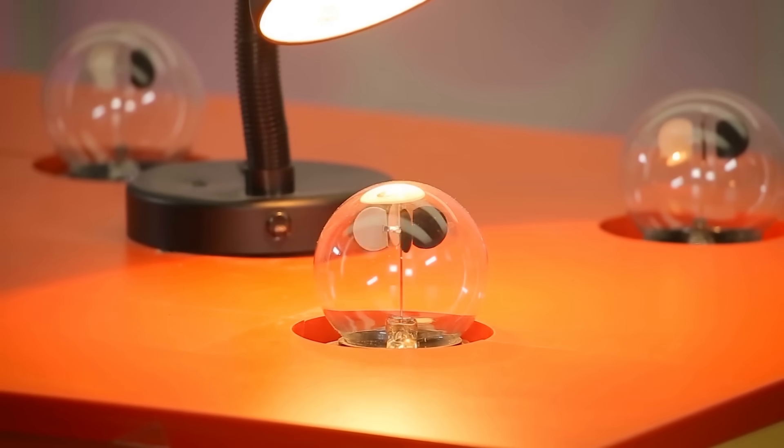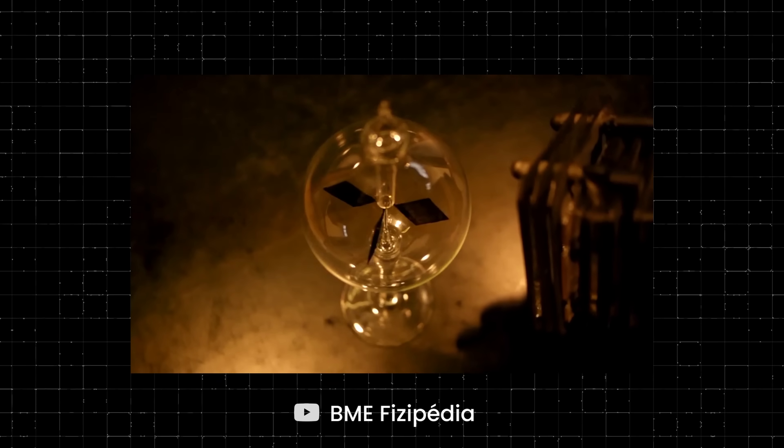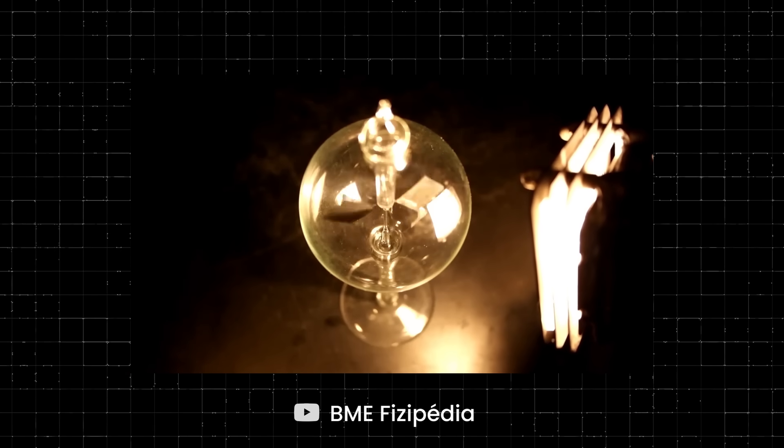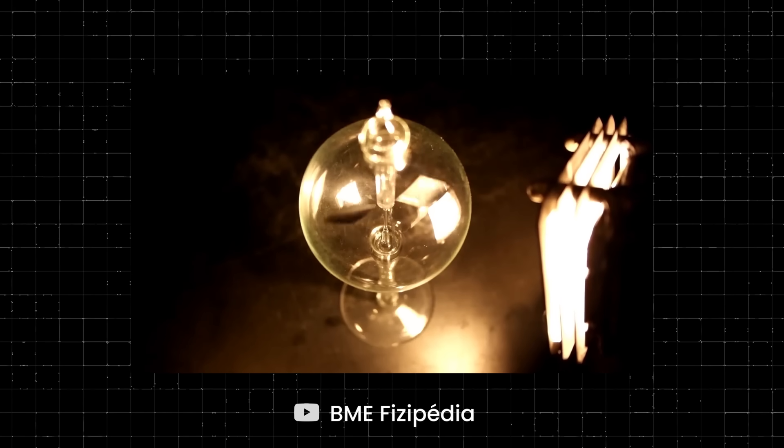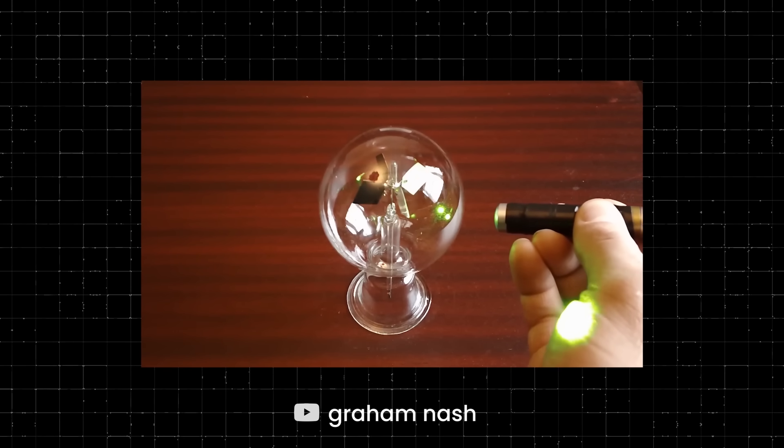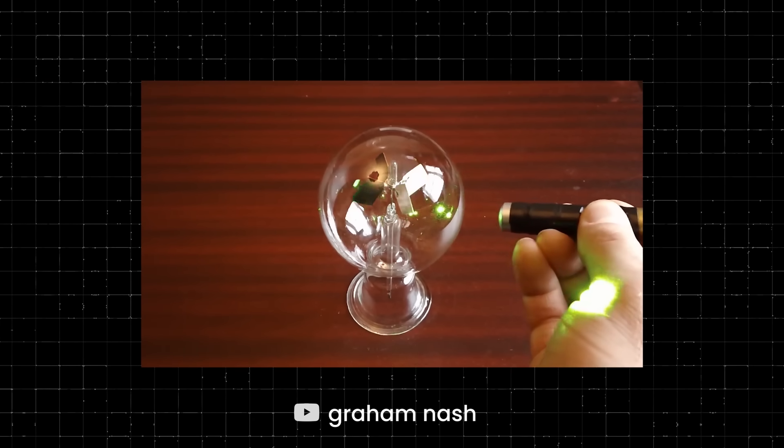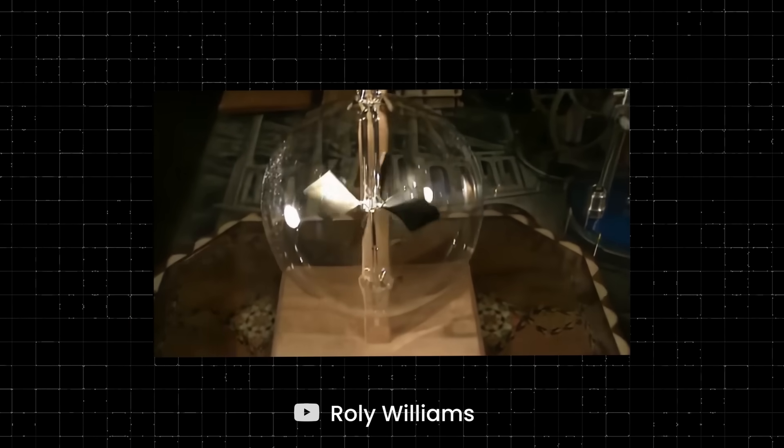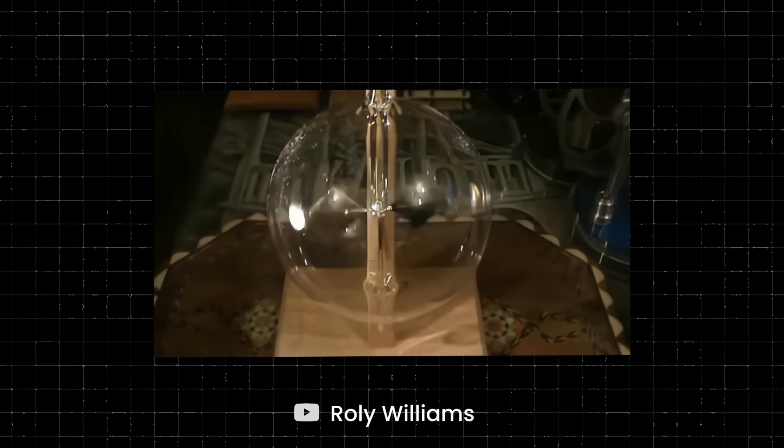A radiometer is a device that measures the amount of radiation hitting an object. Inside of the partially vacuum-sealed bulb is a set of four vanes balanced on a single pole that has free movement. Each vane has a white reflective side and a black side. When the glass bulb is exposed to light, the vanes begin to rotate. The more light that has shone on the glass bulb, the faster the vanes inside will turn. You would think that light is actually putting pressure on the reflective side and causing them to move.